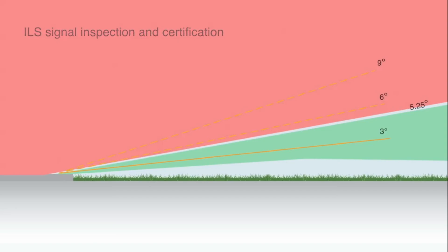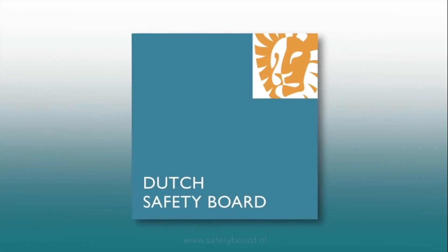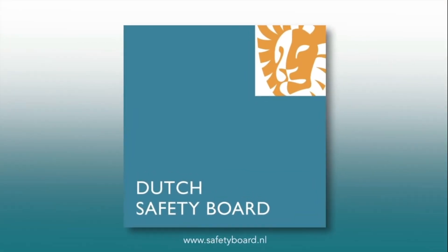The Dutch Safety Board recommends that aircraft are prevented from flying in the area of the ILS with reverse signals. In the unlikely event that aircraft fly in this area, operational or technical measures have to be taken to avoid pitch-up upsets.